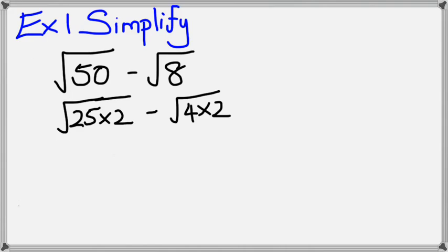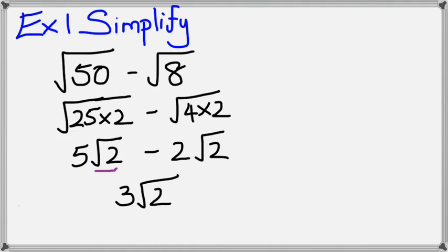Notice that 25 and 4 are perfect squares, which means I could take square root of 25, which would be 5, square root of 2 will still be the same, and square root of 4 is 2, and I've got square root of 2 there. So if I have 5 square root of 2 take away 2 square root of 2, I'm going to get 3 square root of 2.